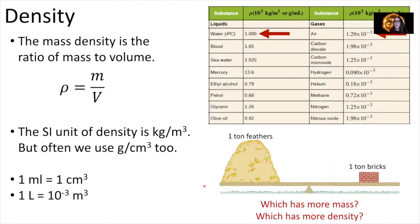Another important concept for this chapter is density. Density is the ratio of the mass of an object to its volume, represented by the Greek letter rho. Density equals mass divided by volume. The SI unit of density is kilograms per meter cubed, though grams per centimeter cubed is also used.